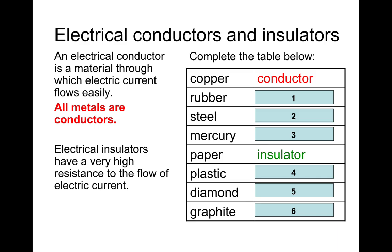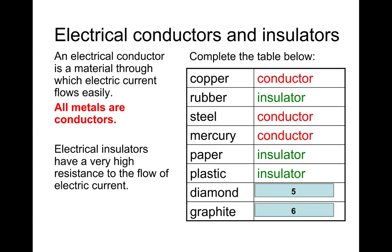I'm going to go through the answers now. So copper is obviously a conductor, rubber, that's an insulator, steel, conductor, mercury, conductor, paper's an insulator, plastic, insulator, diamond, insulator, and graphite is a conductor.